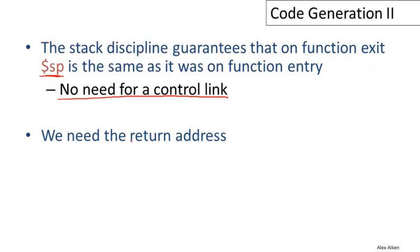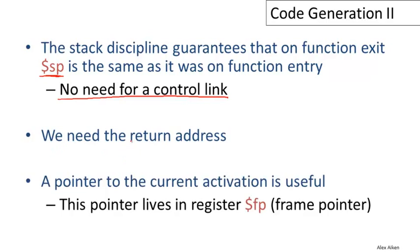We will, however, need the return address, and that will need to be stored somewhere in the activation record. One more thing: a pointer to the current activation will be useful. This pointer will live in the register FP, which stands for frame pointer. This is the register name on the MIPS, and the name is chosen to denote the frame pointer — by convention, compilers put the frame pointer there. The frame pointer points to the current frame; we'll see what it's good for in a few minutes.